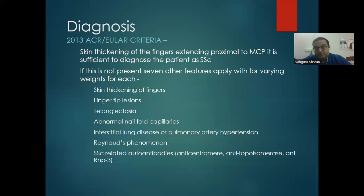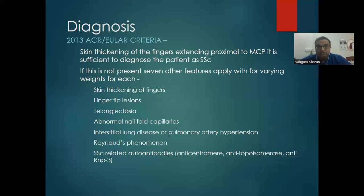Diagnosis: ACR/EULAR 2013 criteria. Skin thickening of fingers extending proximal to the metacarpophalangeal joint is sufficient to diagnose SSc. If not present, use additional criteria: skin thickening of fingers, fingertip lesions, digital ulcers, telangiectasias, abnormal nail fold capillaroscopy, interstitial lung disease, pulmonary artery hypertension, Raynaud's phenomenon, or classical antibodies — anticentromere, anti-topoisomerase (anti-SCL70), and anti-RNA polymerase III.